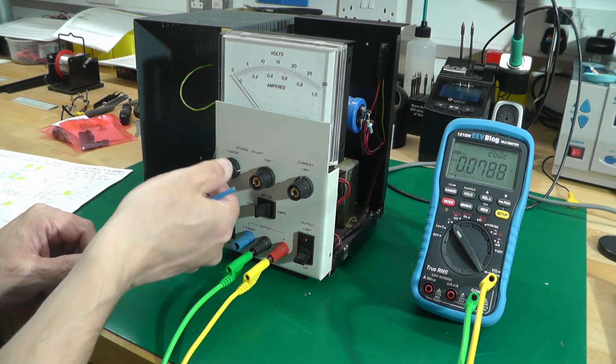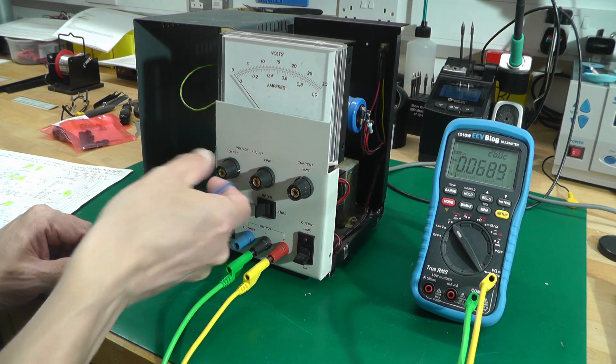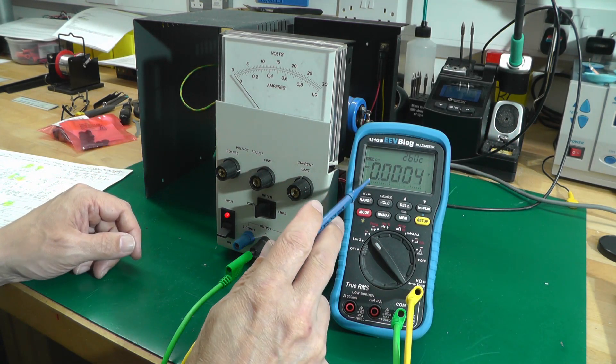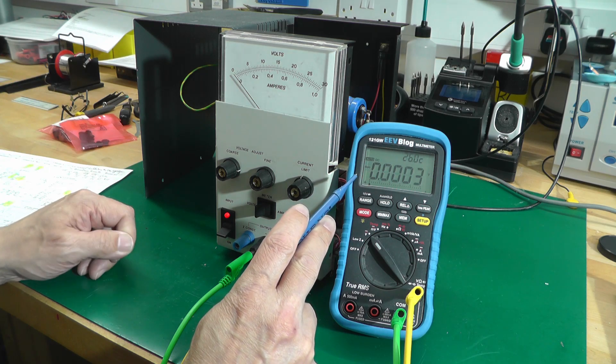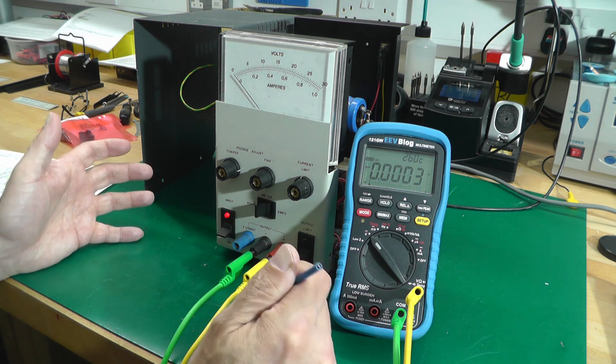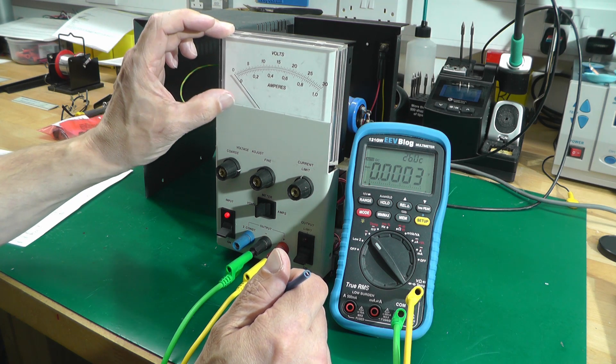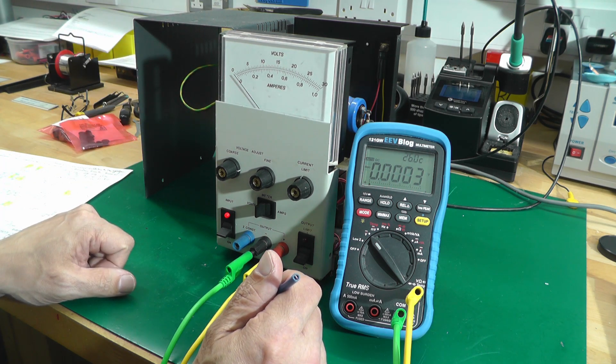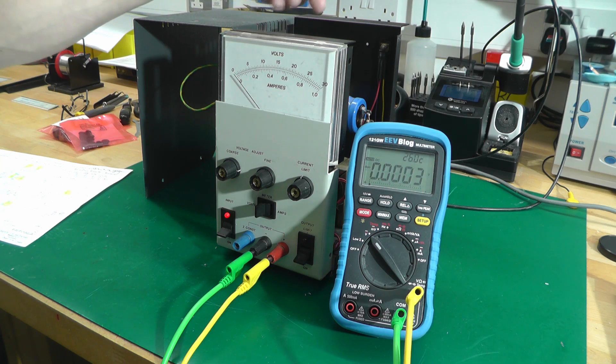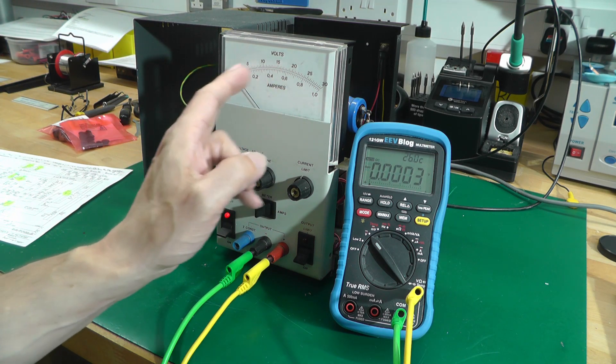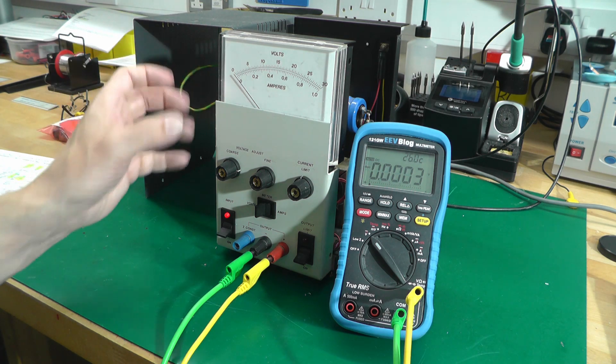When you put the two front panel controls, the zero and the fine, right down at minimum, you can see we're more or less zero volts anyway. The circuit's been designed that way and the only zero control you've got is the physical zero on the meter itself, which we will need to adjust. In my last video I explained there's actually a hole in the PCB that you can put a small screwdriver through to access the zero control on the actual meter.